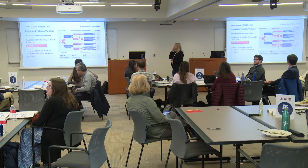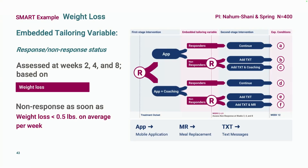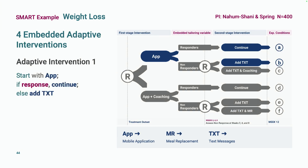Looking at the tailoring variable for the weight loss study: it was assessed at weeks two, four, and eight. As soon as weight loss was less than half a pound on average per week — at either week two, four, or eight — you were re-randomized as a non-responder. Because not everybody was re-randomized, this trial has four embedded interventions instead of eight, and all four are adaptive interventions.